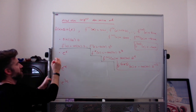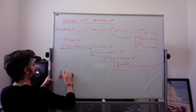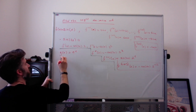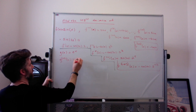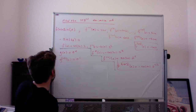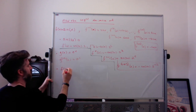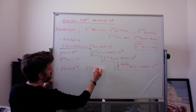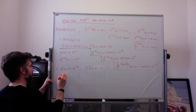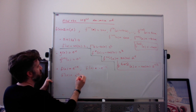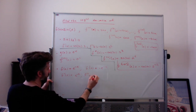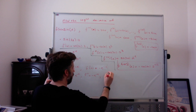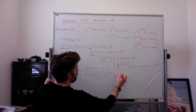E to the x is easy: the 103rd derivative of e to the x is e to the x, because the derivative of e to the x is always e to the x. For f(x) = e to the negative x, the derivatives alternate: the first derivative is negative e to the negative x, the second is positive e to the negative x, the third is negative e to the negative x. Every even derivative is positive, every odd derivative is negative. So the 103rd derivative, which is odd, is negative e to the negative x.